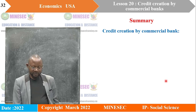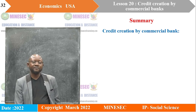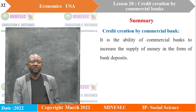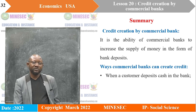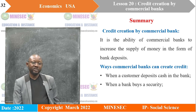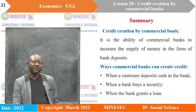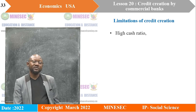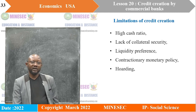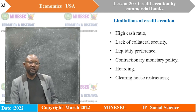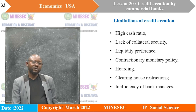Let's recap what we've done in this lesson. We started by defining credit creation as the ability of commercial banks to increase the supply of money in the form of bank deposits. We looked at the various ways through which credit is created: when a customer deposits cash in the bank, when a bank buys a security drawn on itself, and when the bank grants a loan. We also saw the limitations of credit creation, such as high cash ratio, lack of collateral security, liquidity preference, contractionary monetary policy, holding of cash, clearinghouse restrictions, and inefficiency of bank managers.